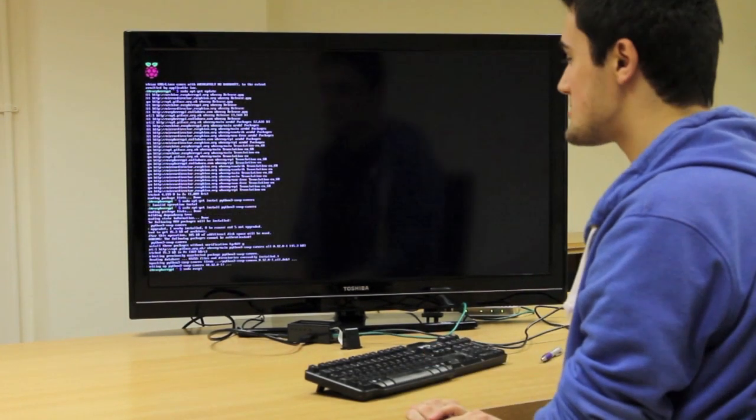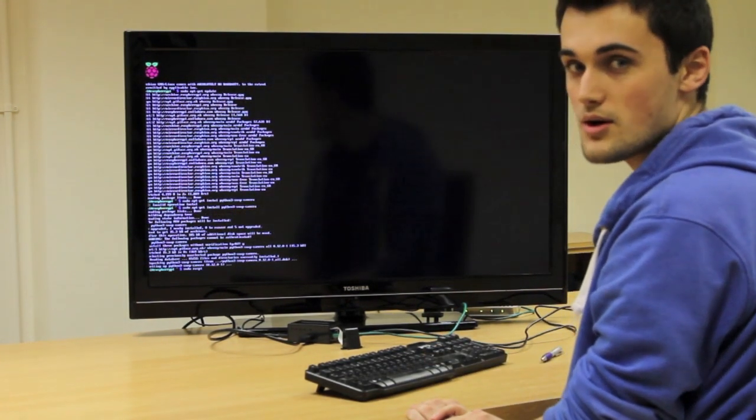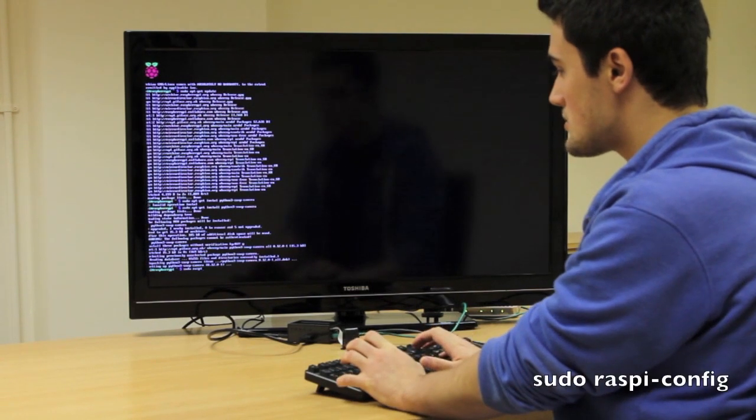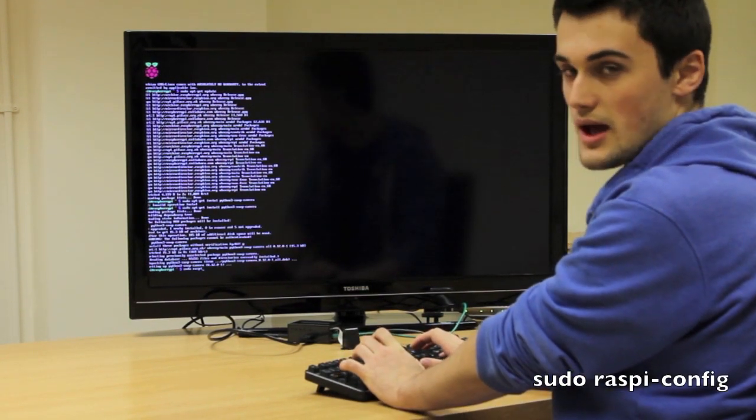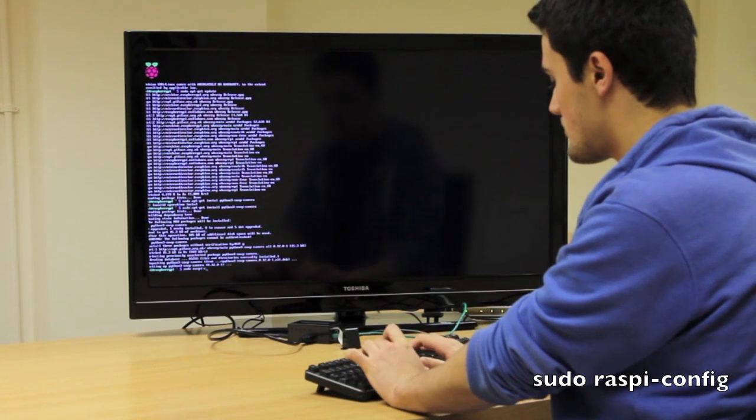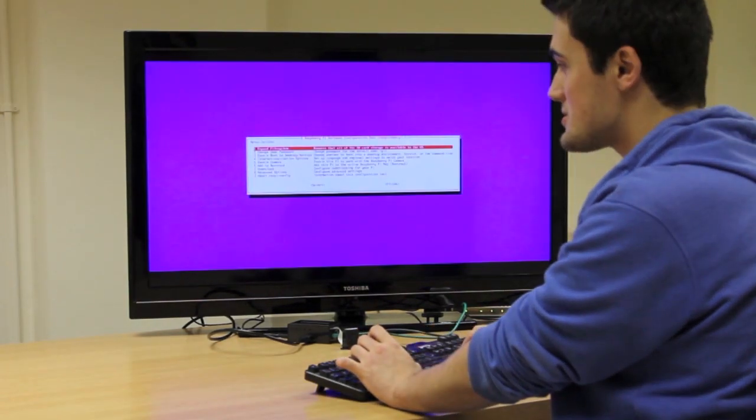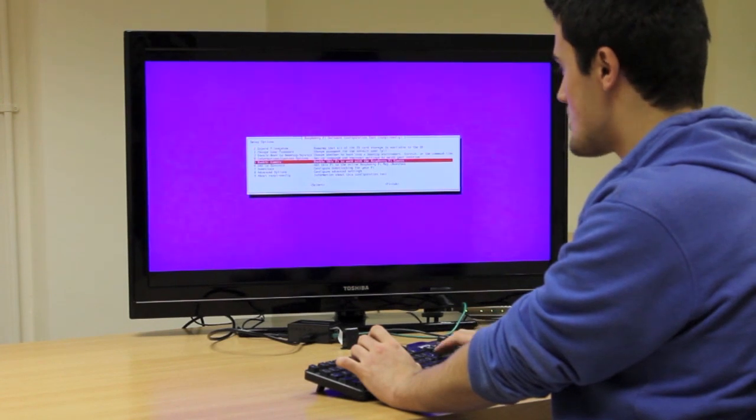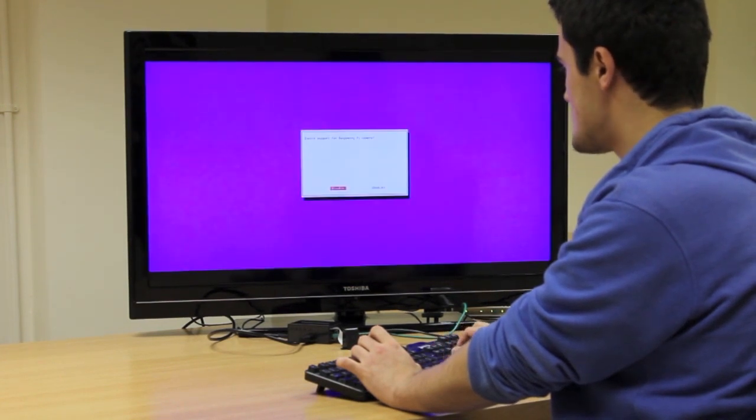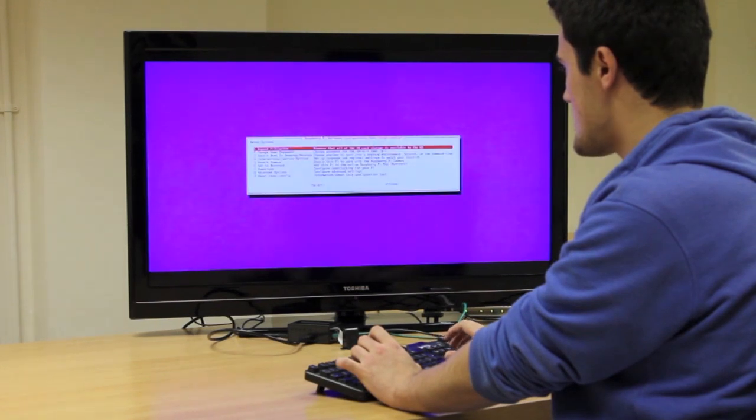Now that's installed, we're going to enable the SPI and the camera on our Raspberry Pi. We're going to do sudo raspi-config, r-a-s-p-i-dash-c-o-n-f-i-g. We're going to go down to the fifth option, enable camera, enter, and then write and enable.